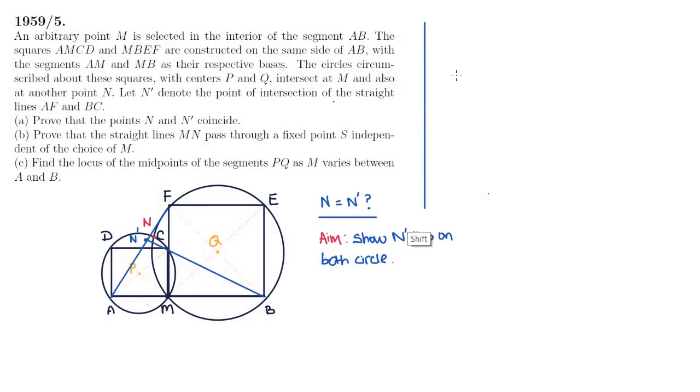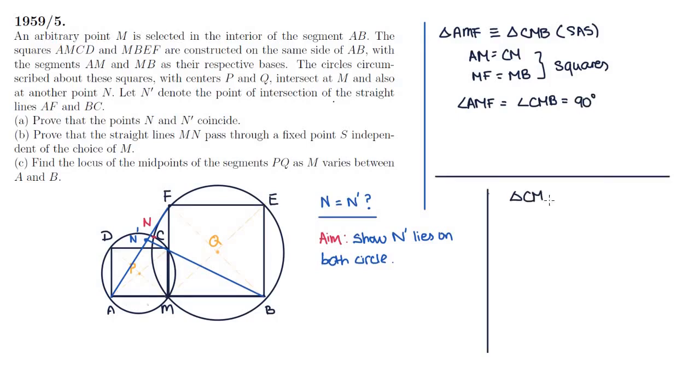The blue lines carve out a few triangles, so let's try playing with them. First, let's look at triangles AMF and CMB. And we're going to show that these are congruent, because they have the same sides and the same included angle. Why do they have the same sides? Because AM is equal to CM and MF is equal to MB, because these are the respective sides of the squares that we have constructed. And angle AMF is equal to angle CMB, because both are equal to 90 degrees, because they're corners of the squares we've constructed.